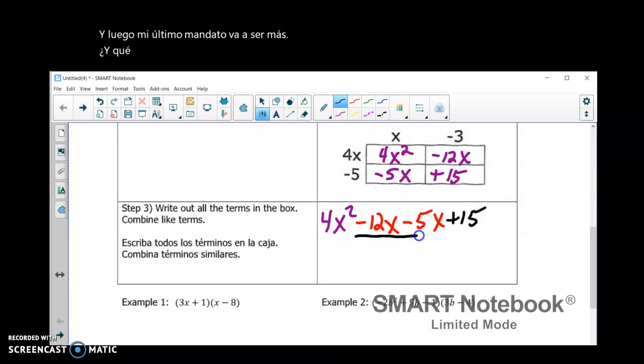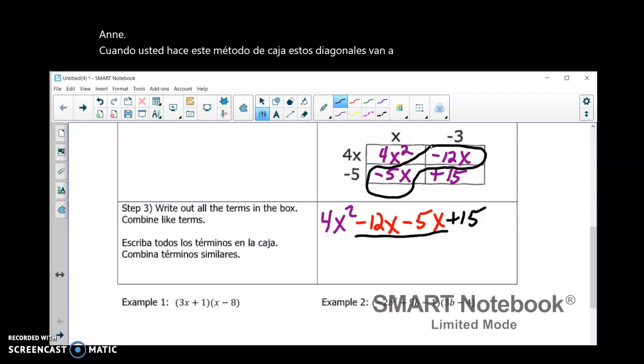And what you notice here, my two middle terms are going to be like terms. And when you do this box method, these diagonal ones are going to be the like terms. So, I have to combine those.